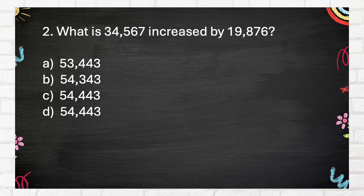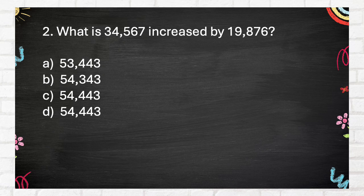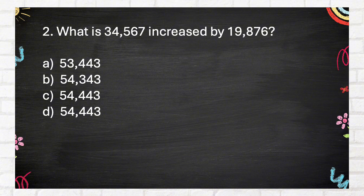Question number 2. What is 34,567 increased by 19,876? A. 53,443, B. 54,343, C. 54,443, D. 54,443.